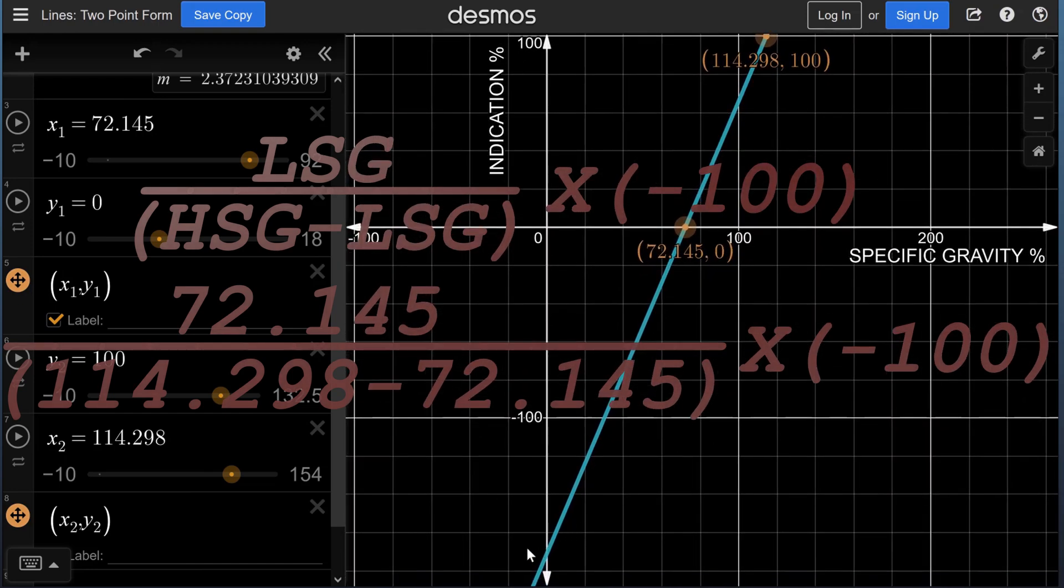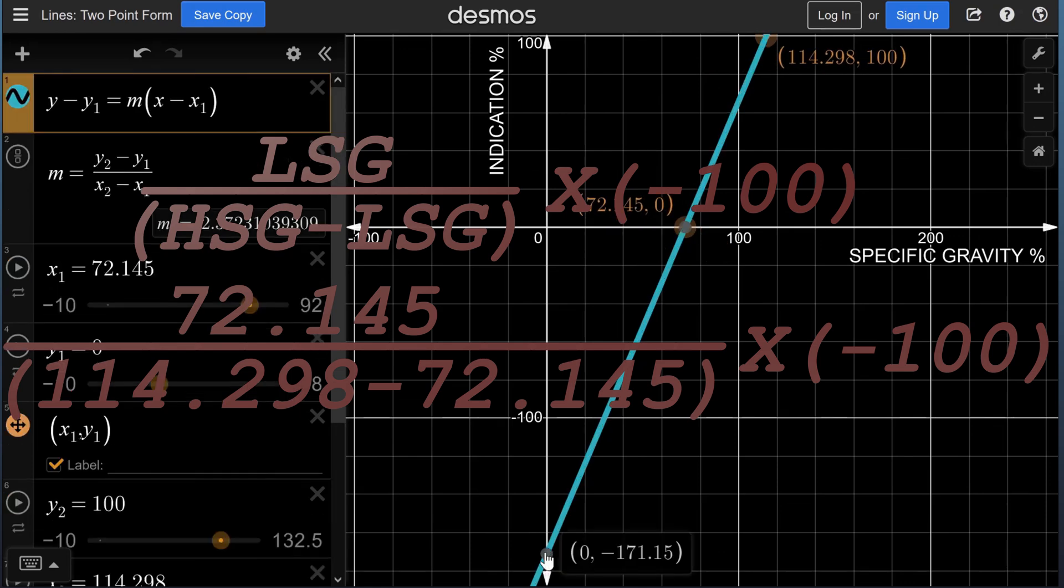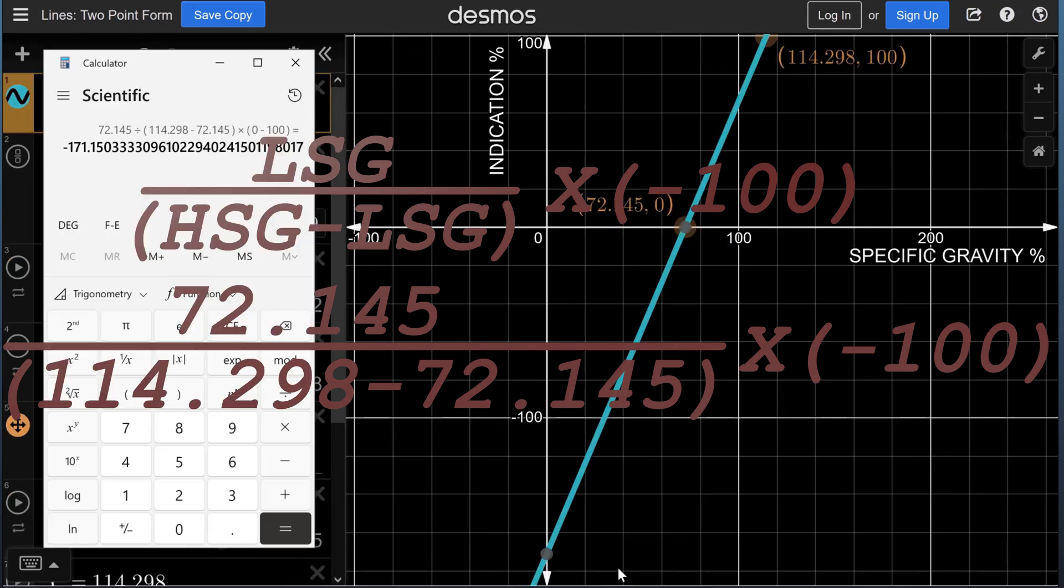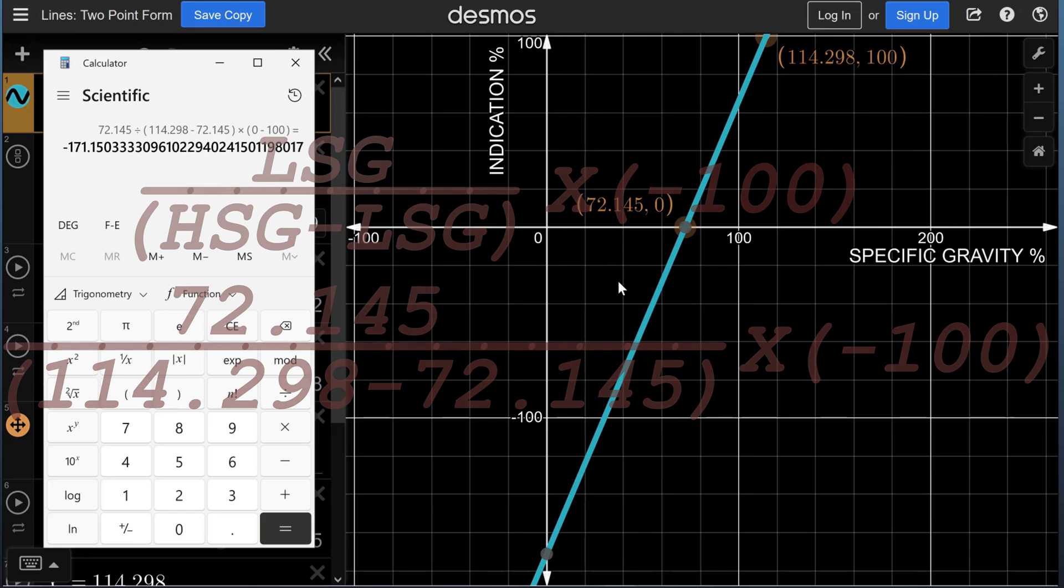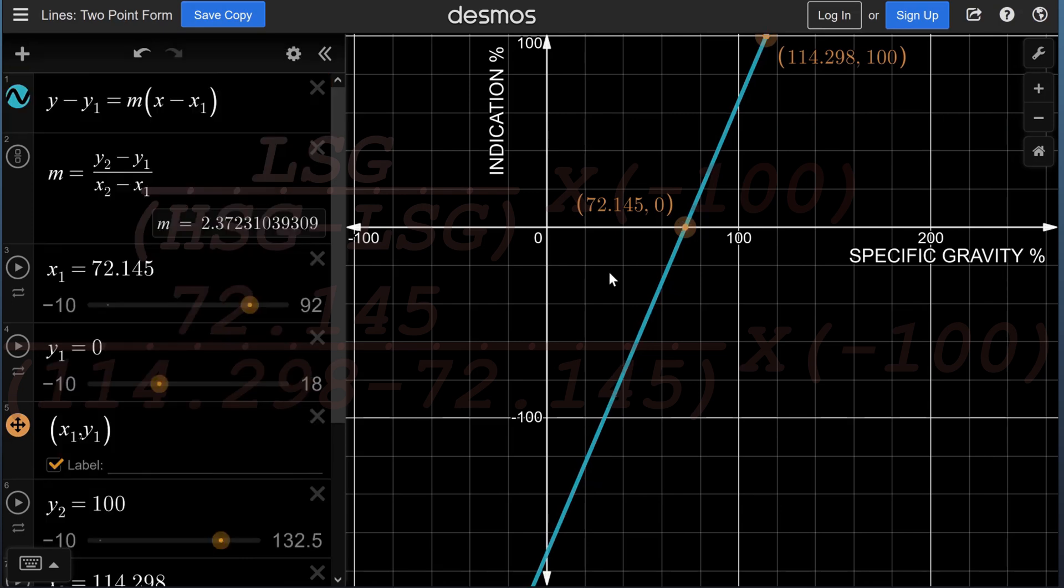Here is the value at the intersection with the Y-axis, and it is the same value as the calculator. For the above mentioned example to exist, the displacer of the instrument should be standard and calibrated in full range.